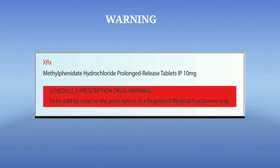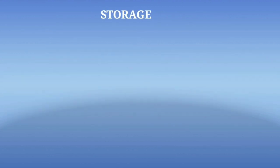Schedule X drugs are narcotic drugs and psychotropic drugs. The symbol X or X in red is shown on the left hand top corner as a warning sign, and these are to be sold on the prescription of RMPs only.